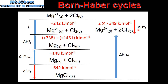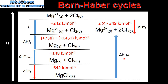The next step is the first electron affinity. This is the enthalpy change when one mole of electrons is added to one mole of gaseous atoms. Because we have two moles of gaseous atoms, the value for this enthalpy change is multiplied by two. We now have all the necessary values to calculate the lattice enthalpy of magnesium chloride.